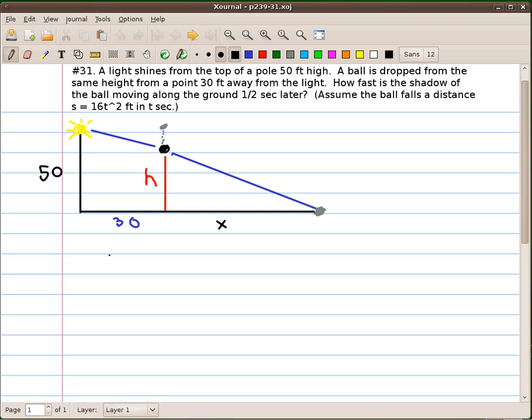Well, right away I can write an expression for the height of the ball at any point in time. If I write h equals 50, which is where it started, minus the distance it's falling, which is 16t squared. Okay? So this h can be represented by this expression.